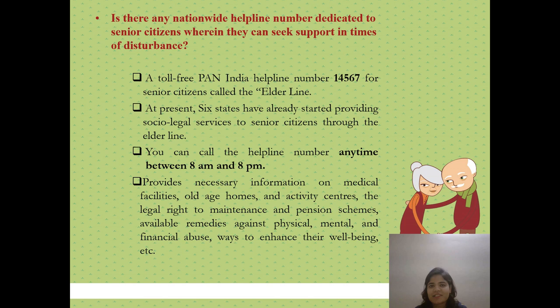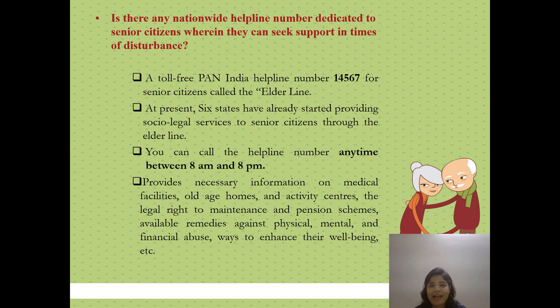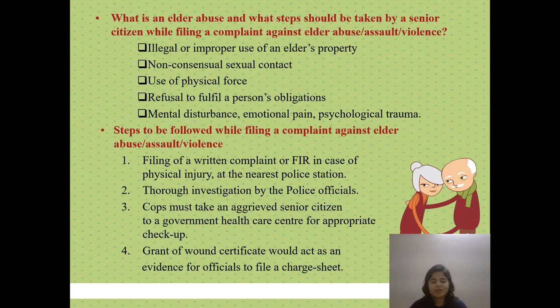The Union Ministry has set up a national implementation agency hosting the Elder Line in collaboration with several NGOs, senior citizen groups, state and central government organizations, and various institutes of social defense. At present, six states including Karnataka, Tamil Nadu, Telangana, Uttar Pradesh, Madhya Pradesh, and Rajasthan have started providing social legal services to senior citizens through the Elder Line. You can call the helpline number anytime between 8am and 8pm. The objective of Elder Line is to provide information on medical facilities, old-age homes, recreational activity centers, legal rights to maintenance and pension schemes, available remedies against physical, mental, financial, and sexual abuse, and different ways senior citizens can enhance their well-being.